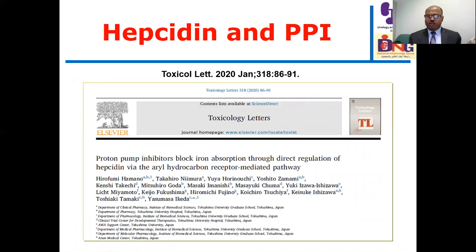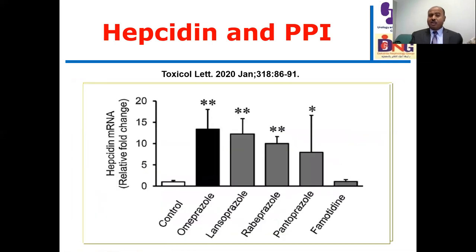Regarding proton pump inhibitors: over the last five or six months I have been totally against the abuse of proton pump inhibitors—once critically indicated we can use them, but for a short period. Adding to this, there is an interrelationship between PPIs and hepcidin. In a hepatoma cell line study, use of proton pump inhibitors was associated with increased hepcidin mRNA. Omeprazole, lansoprazole, rabeprazole, and pantoprazole are all associated with a significant increase of hepcidin, compared to control and H2 receptor blockers.